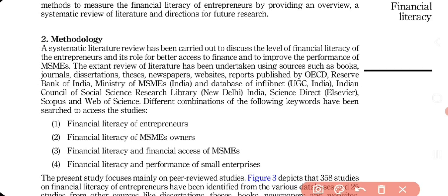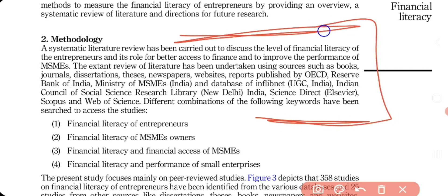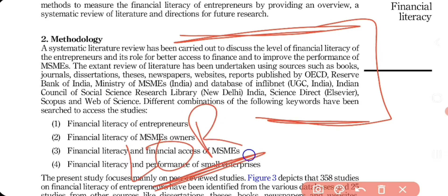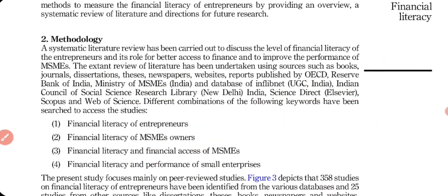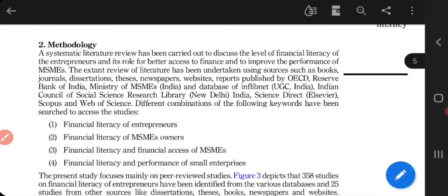The methodology part plays a significant role — whoever reads your paper will definitely read the methodology to understand how you conducted the entire study. Since this is a literature review paper, the secondary sources used must be mentioned. I used reports from the Ministry of MSMEs, OECD, Reserve Bank of India, and UGC, as well as databases such as ScienceDirect, Scopus, and Web of Science.